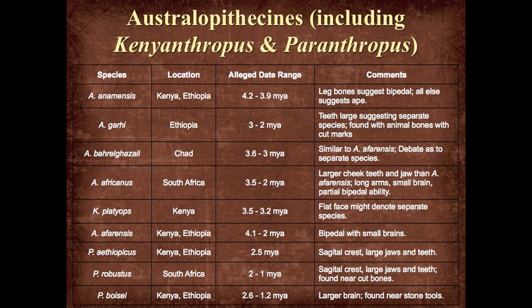Next slide. Looking at the alleged date ranges — which I don't accept, as they're based on radioisotope dating we'll address in another lecture — taking evolutionary arguments at face value, Kenyanthropus platyops and three species of Paranthropus have date ranges anywhere from 4.2 million to 1 million years ago. In graduate school these were also known as Australopithecus robustus before being reclassified as Paranthropus.